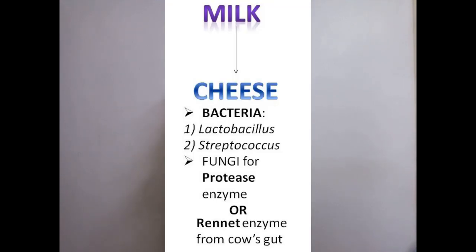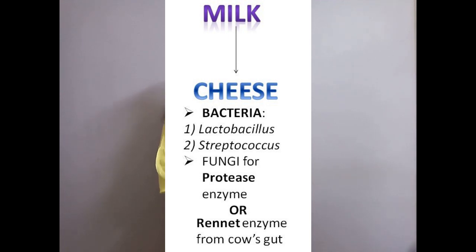In cheese production, liquid milk is used, not cream. The first step is addition of Lactobacillus and Streptococcus. The second and most important step is addition of rennet, which is an enzyme obtained from the stomach of a cow or buffalo. For vegetarians, the alternative is protease enzyme, which is obtained from various fungi.